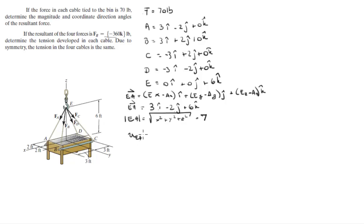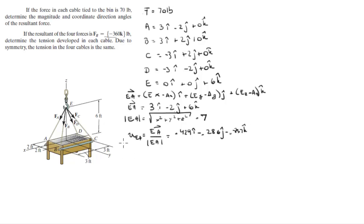To find the unit vector of EA, we divide vector EA by its magnitude. That gives a unit vector of 0.429i − 0.286j − 0.857k. Since we're given the force is 70 pounds, multiplying the force by this unit vector gives us the Cartesian vector form of force A, because this is vector E to A.